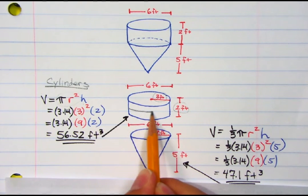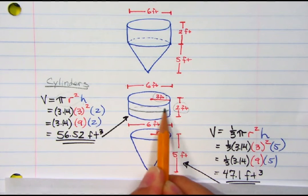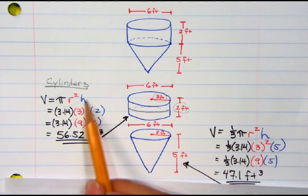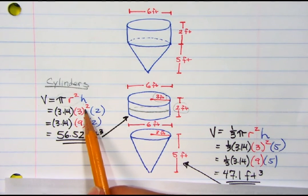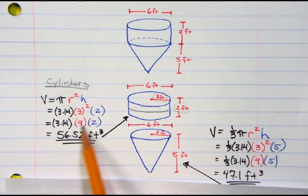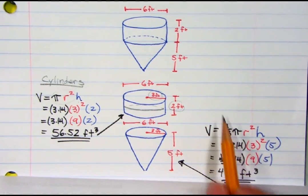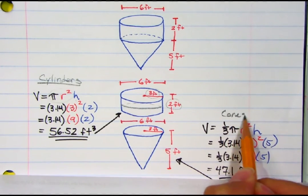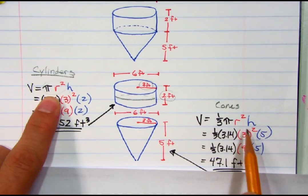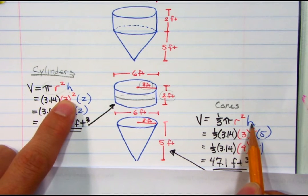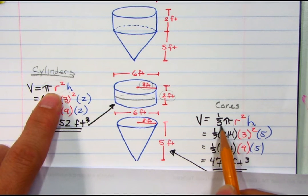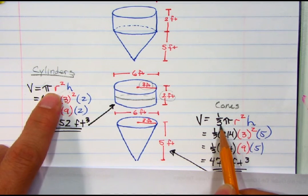So I plug it in, radius is 3 squared, I get 9, multiply all three numbers together, I get 56.52. Then I come over here, and this is for a cone. Cone is very similar to pi r squared times height, same thing as a cylinder, except it's a third of it.